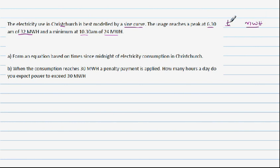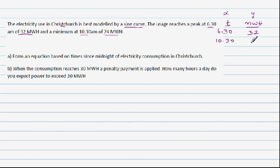T is the independent variable and megawatts is the dependent variable, so time goes on the x-axis and megawatts goes on the y-axis. At 6:30 you have a peak of 32 megawatts, and at 10:30 you have a trough — a minimum — of 24 megawatts. From this, the maximum is 32 and the minimum is 24.